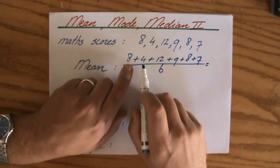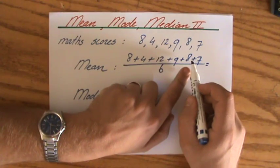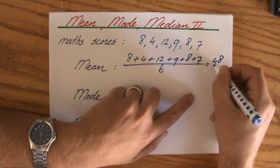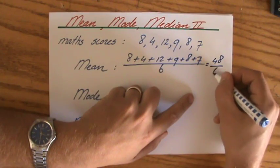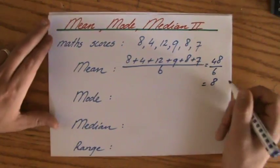All right, so that's going to be 12, 24, 33, 41, 48—sorry, lost me there for a minute—48 divided by 6.